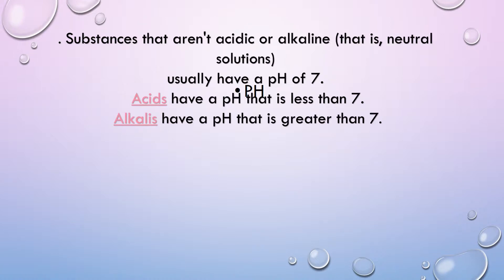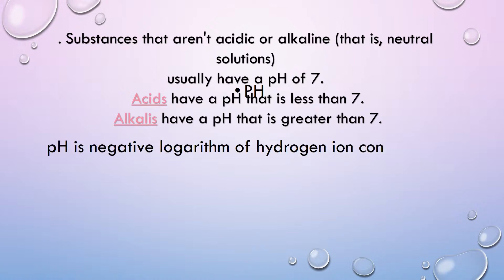Substances that are not acidic or alkaline — that is, neutral solutions — usually have a pH of 7. Acids have a pH of less than 7. Alkaline solutions have a pH greater than 7. pH is the negative logarithm of hydrogen ion concentration.